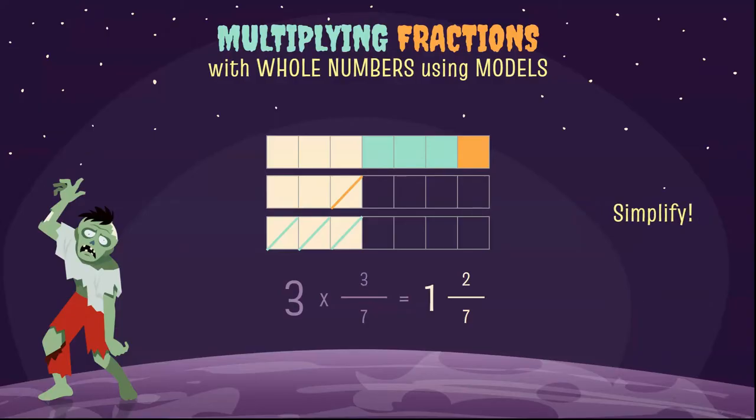Both two and seven are prime numbers, so this fraction is already simplified.